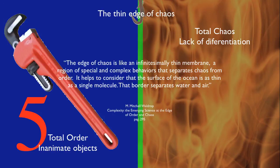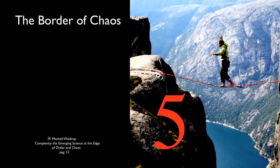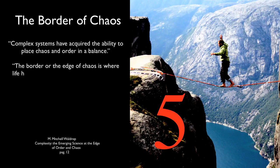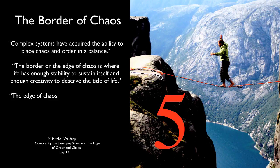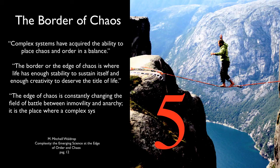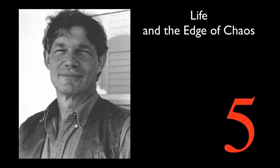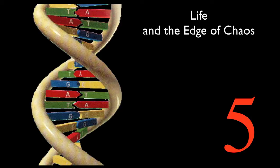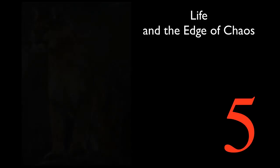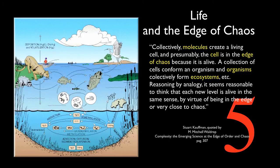If the area of fire describes the thermodynamic chaos, and the blue region is the absence of movement, life is generated in the very thin border between the blue and the fire regions. The edge of chaos is like a thin membrane — a region of special and complex behaviors that separates chaos from order. What lies on the other side of life in the opposite direction of chaos? The total order of inanimate objects. Waldrop explains: complex systems have acquired the ability to place chaos in order in a balance. The border, or the edge of chaos, is where life has enough stability to sustain itself and enough creativity to deserve the title of life. The edge of chaos is constantly changing — the field of battle between immobility and anarchy. It is the place where a complex system can be spontaneous, adaptive, and alive. Kaufman has stated: collectively, molecules create a living cell, and presumably the cell is at the edge of chaos because it is alive. A collection of cells can form an organism, and organisms collectively form ecosystems.